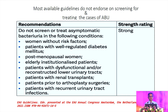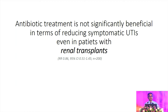The categories for which guidelines advise against screening or treatment include: women without risk factors, patients with well-regulated diabetes, postmenopausal women, elderly institutionalized patients, patients with dysfunctional or reconstructed lower urinary tract, and patients with renal transplants. The strength of evidence is very strong not to screen or embark on treatment in these patient categories.